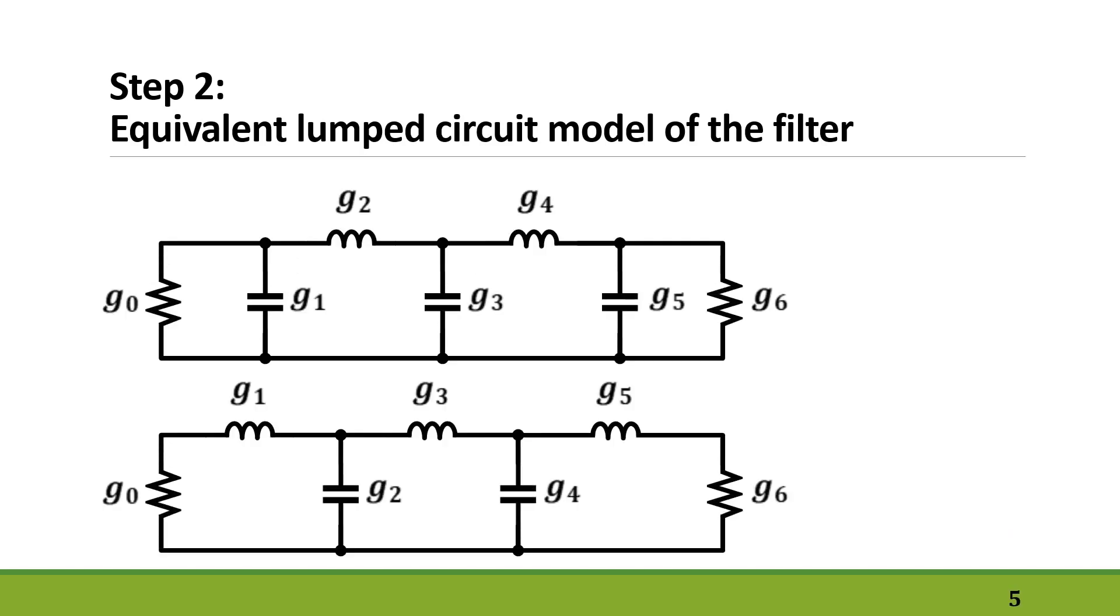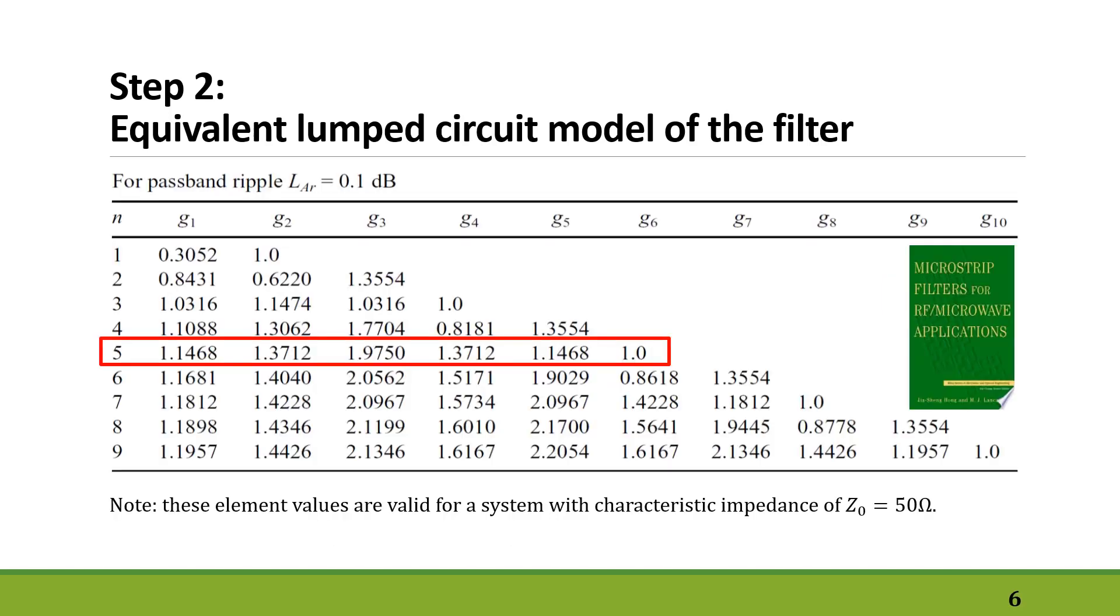We have two types of lumped element circuit models for a low-pass filter and they both work fine. This time we are going to use the first one. The values for inductors and capacitors are something that you can find in a microwave book. There are a few tables in any microwave books.